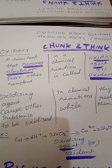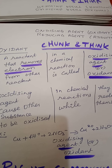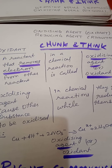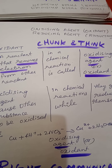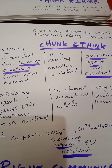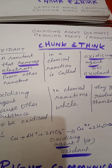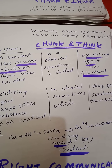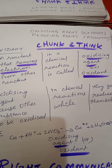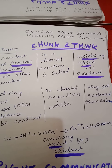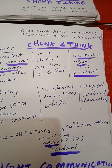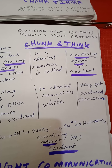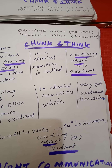The reactant that removes electrons from other reactants — this is a column, this is a chemical reaction. That's why we can learn how to learn electrons. It's called oxidizing agent. How can you use this visual?